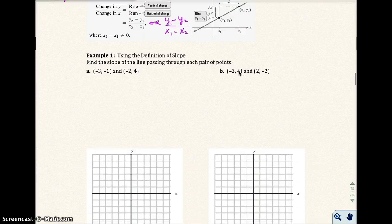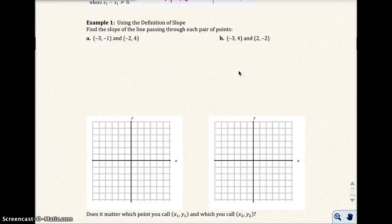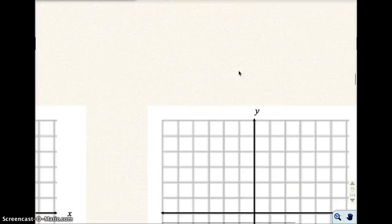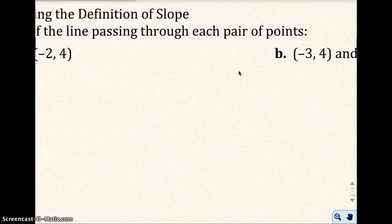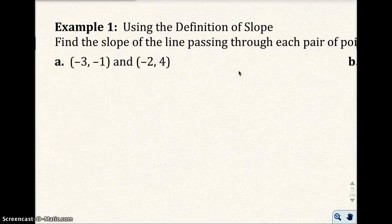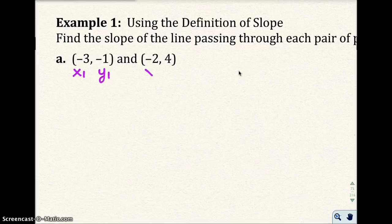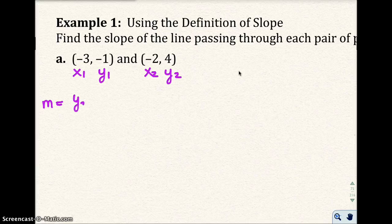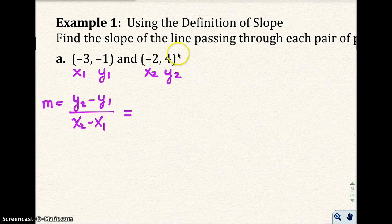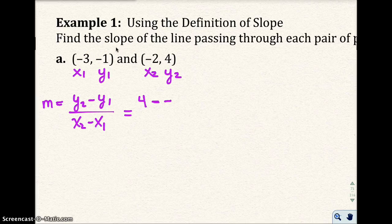Let's go to Example 1: find the slope of a line passing through each pair of points. When you do these problems, I always recommend labeling one point x₁, y₁ and the other x₂, y₂. Using the first version of the formula, I'm going to take y₂ minus y₁ over x₂ minus x₁. So y₂ is 4, minus y₁ which is negative 1.